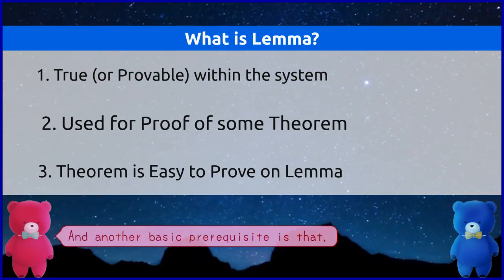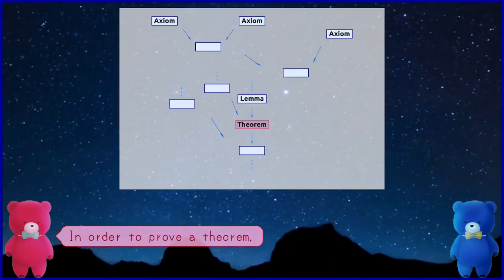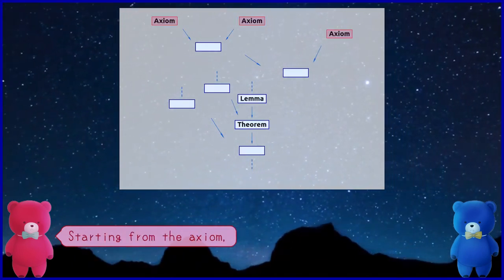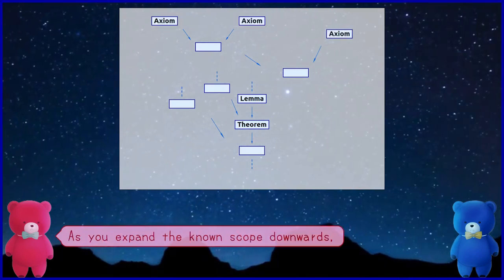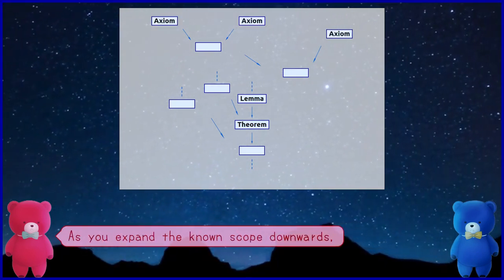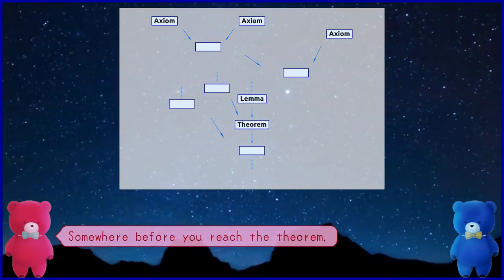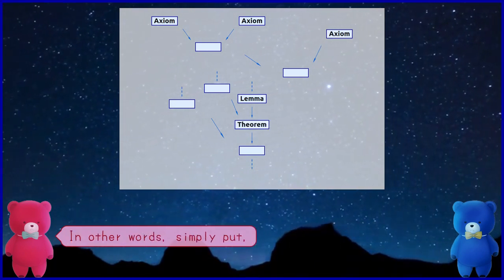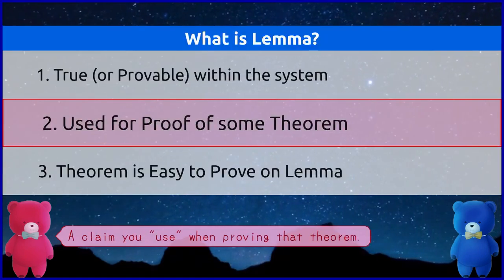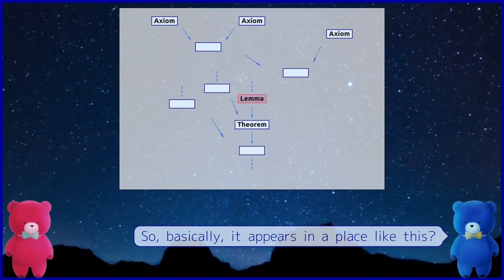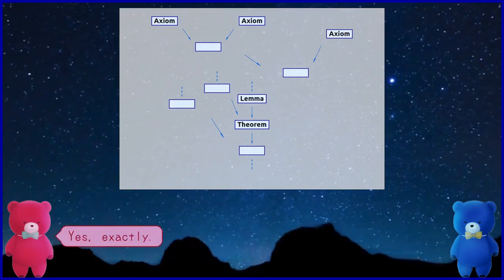And another basic prerequisite is that, in order to prove a theorem, starting from the axiom, as you expand the known scope downwards, somewhere before you reach the theorem, in other words, simply put, a claim you use when proving that theorem. So, basically, it appears in a place like this. Yes, exactly.